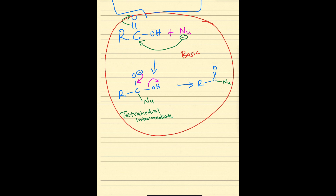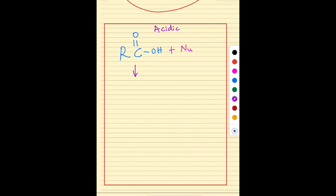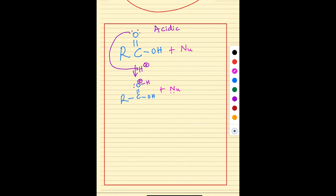Under acidic conditions, you start with protonation. Under acidic conditions you have plenty of protons, and the first step is the protonation of that oxygen — it connects to a hydrogen ion, giving you a protonated oxygen with a formal positive charge. The next step is the addition of the nucleophile. We cannot use a negatively charged nucleophile; we have to use a lone pair of electrons because it's under acidic conditions. The lone pair attacks the electrophilic carbon, and the double bond electrons flow to oxygen to neutralize the positive charge. The nucleophile is now connected to the carbon — this is again the tetrahedral intermediate.